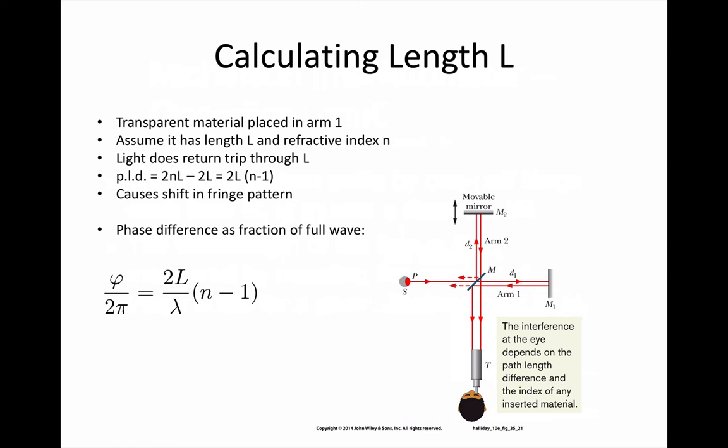Once again, the optical path length of one arm will have changed. So if you place a sample in one of the arms, and count the number of fringes that the pattern moves, then you can calculate the refractive index of material by working out the phase shift from that material.